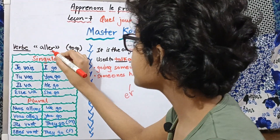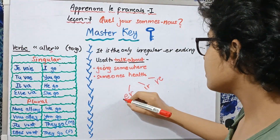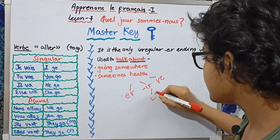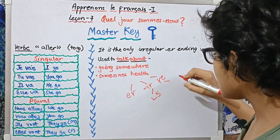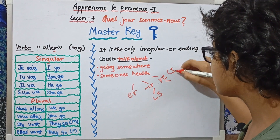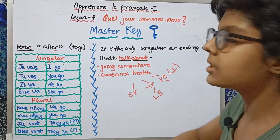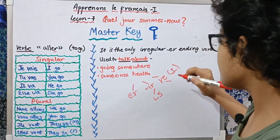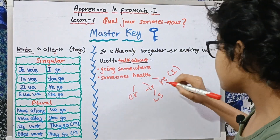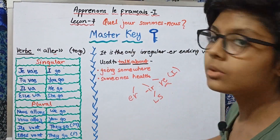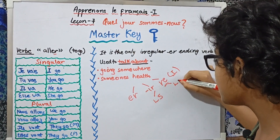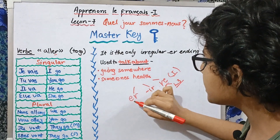We have done the IR verb in Lesson 5, and we have also read about the RE verb — it is an irregular verb. The reason is that most verbs in the RE group do not follow the conjugations of their respective group. Now you all know what conjugation is, as I explained it in Lesson 5 and Lesson 3 as well.